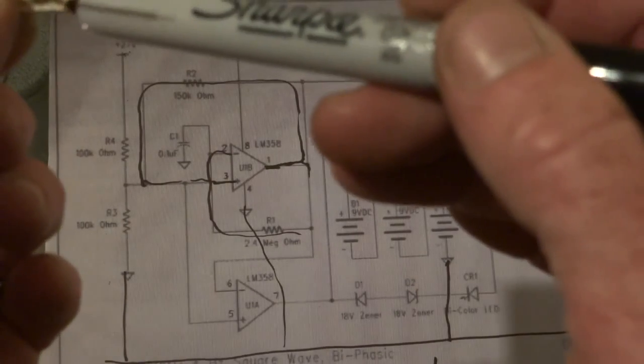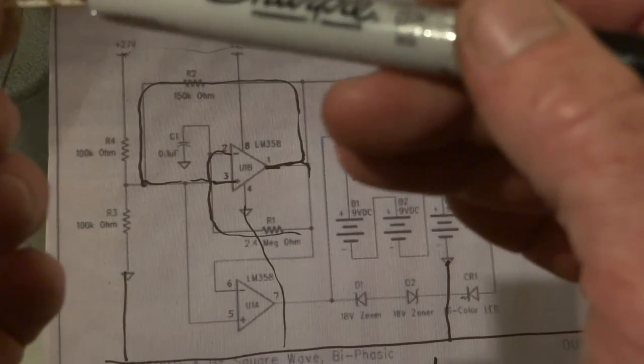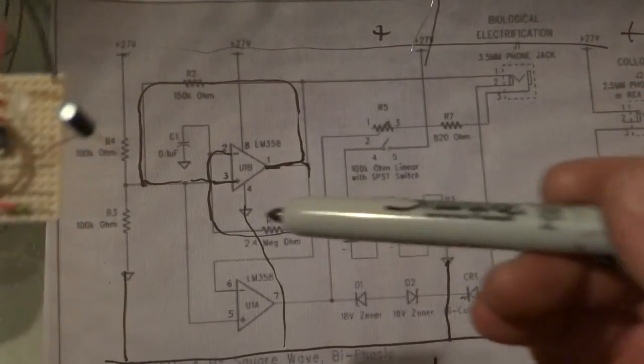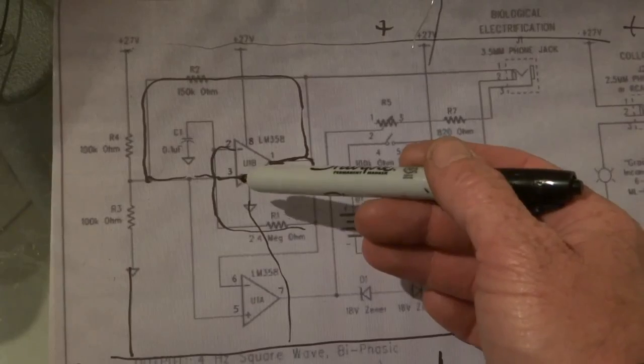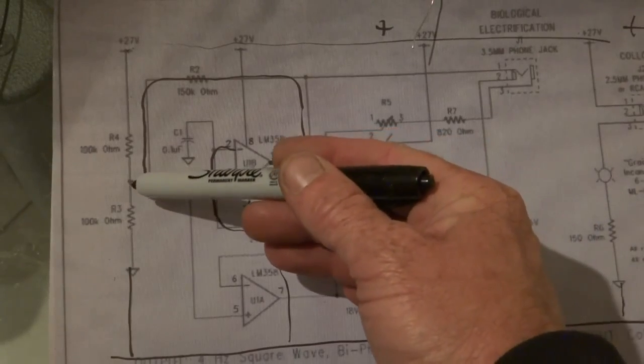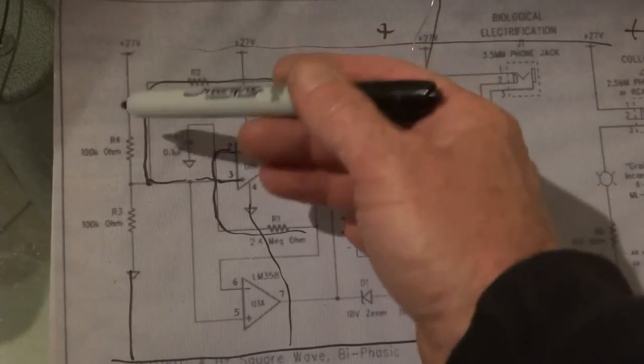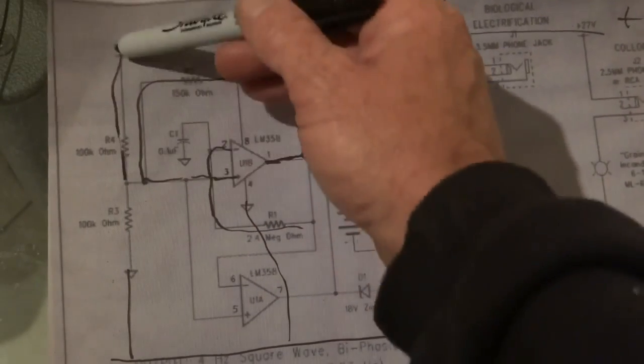Then we had the 100k ohm resistors, these two down the bottom here, which is the ones that come out of number 3, and they go down here to the negative and one goes up to the positive. So that's that basically done.